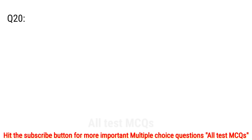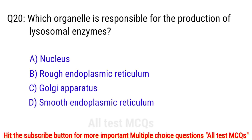Question number 20. Which organelle is responsible for the production of lysosomal enzymes? The right answer is option C: Golgi apparatus.